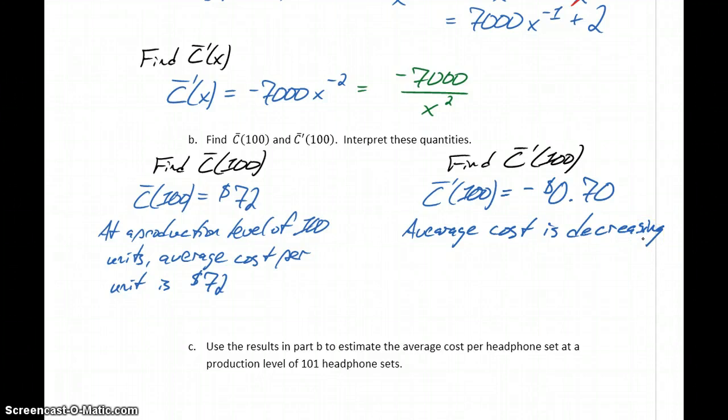What that means is that our average cost is decreasing since we have a negative value here. Our average cost per item is decreasing at a rate of 70 cents per unit. So on average, for each additional unit that we're producing, costs are decreasing by about 70 cents per unit.